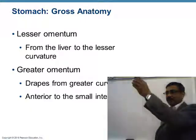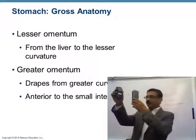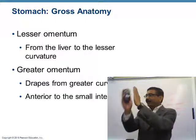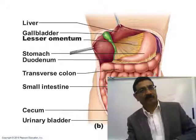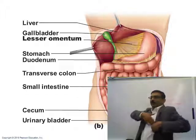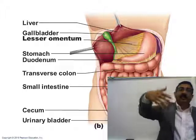From the liver, the membrane goes to the lesser curvature of the stomach, covers the whole stomach, and gets fused at the greater curvature. From the greater curvature, it drops down like a tablecloth and hangs — that hanging portion is the greater omentum. The upper end is attached to the greater curvature; the lower end is free.